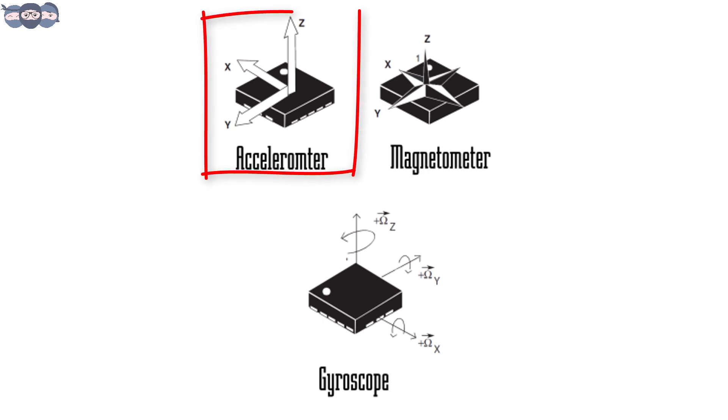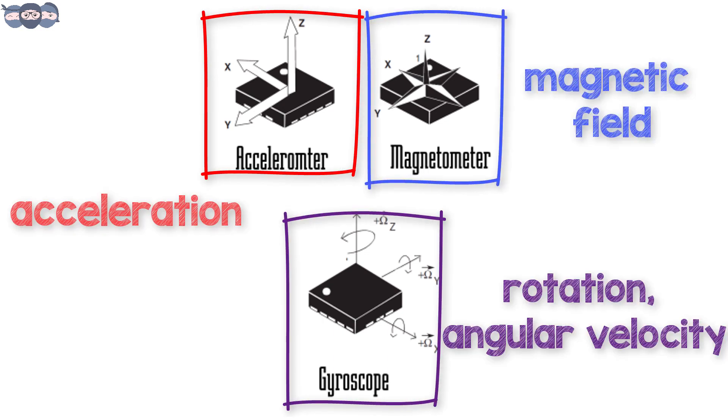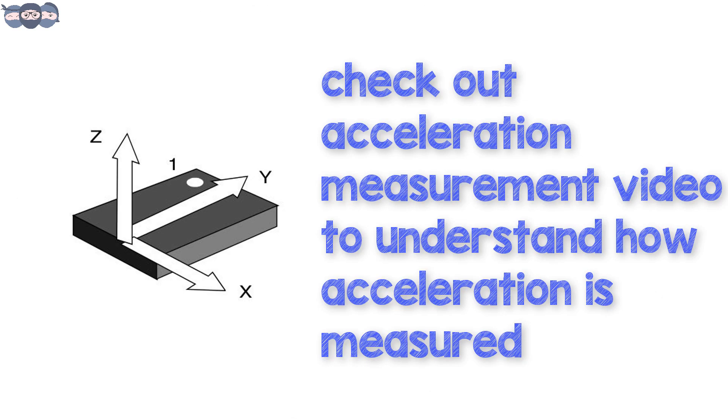This is made possible only because of the use of sensors which measure acceleration, rotation, and sometimes even magnetic field acting on the body. The part about acceleration measurement is already covered in the video of accelerometer.